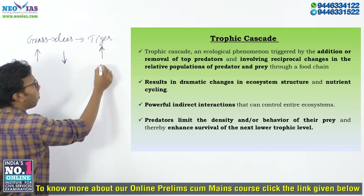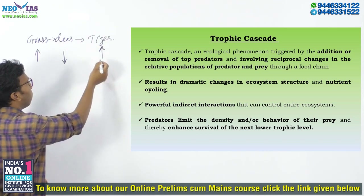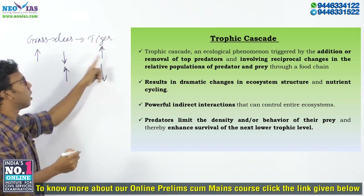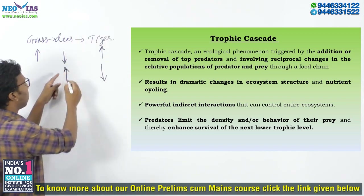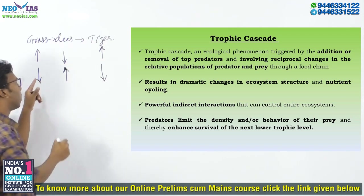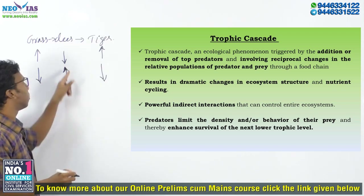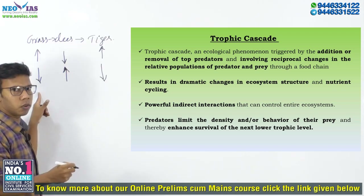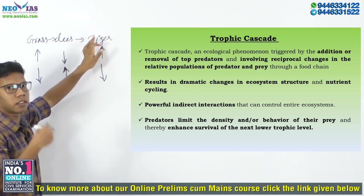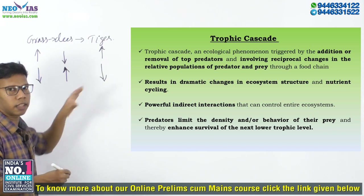Now take the example when Tiger population decreases — due to some factors, Deer population will increase. When Tiger decreases, Deer will increase because there is no Tiger to eat the Deer. When the Deer population increases, Deer will eat all the grasses, thereby Grass will decrease. So, decrease in Tiger population will result in increase in Deer and decrease in Grass. Addition or removal of the Tigers — the top predators — will result in population changes of the lower Trophic level species. That is called Trophic Cascade.